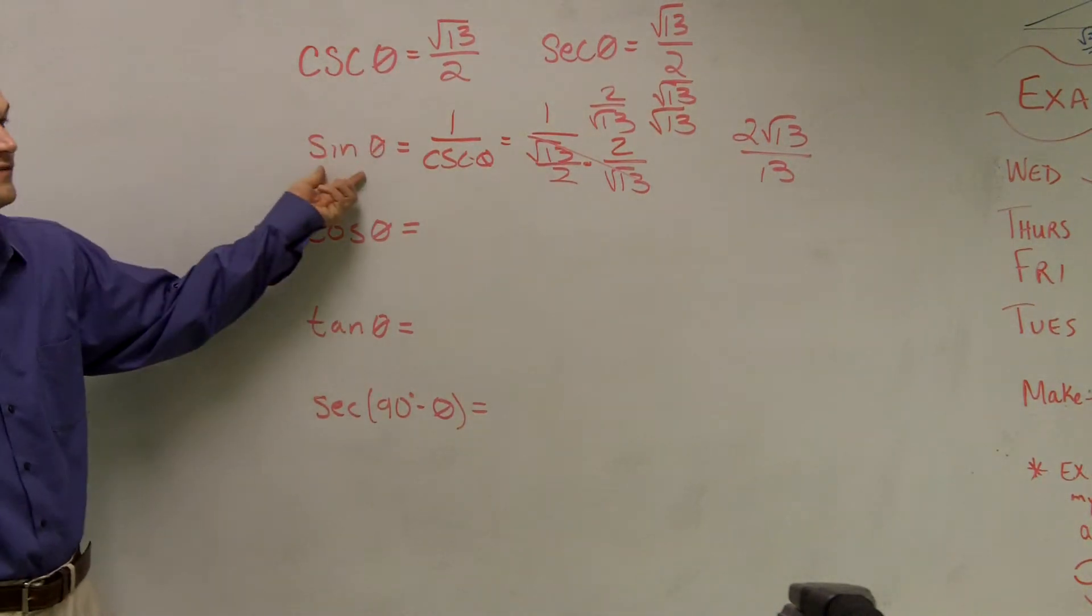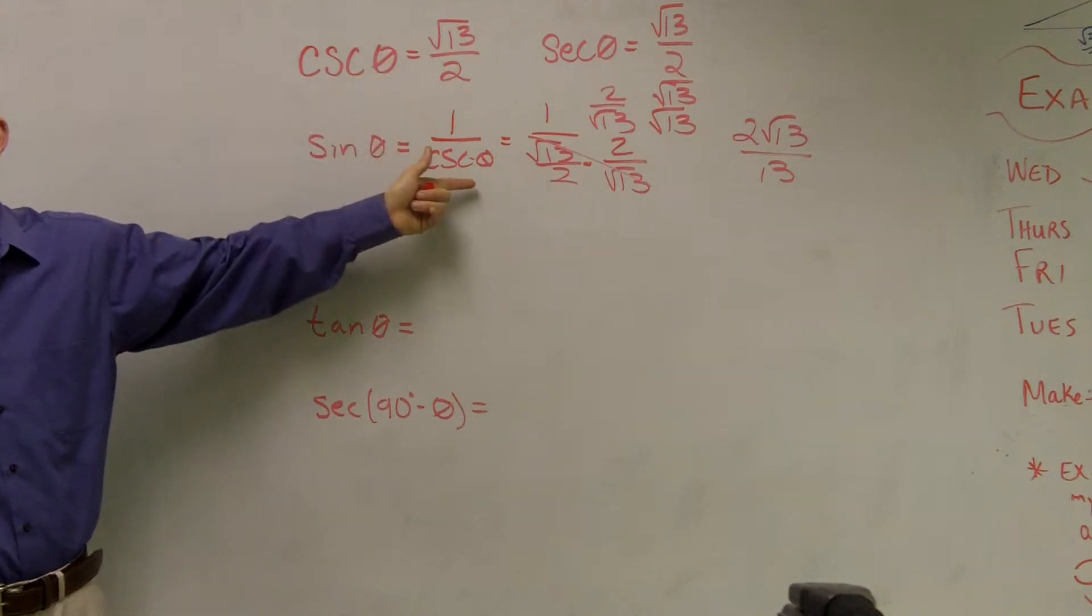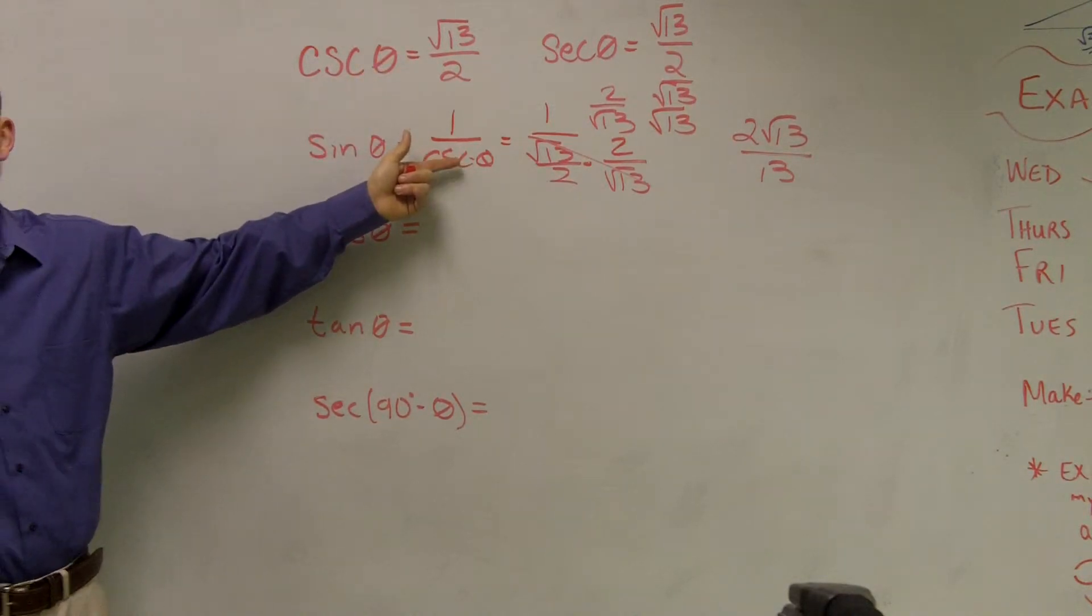Okay, so you can just take, if you're given the cosine, or I'm sorry, you're given the cosecant, and they say find the sine, just put it over 1.